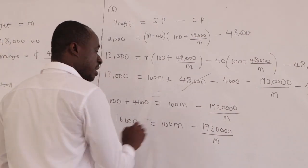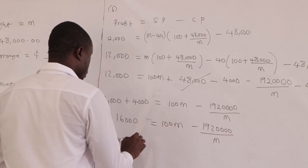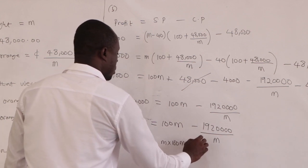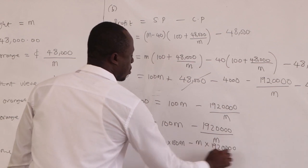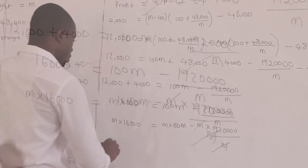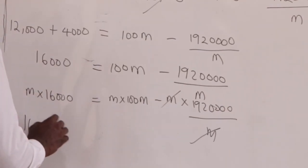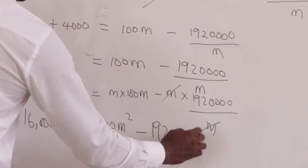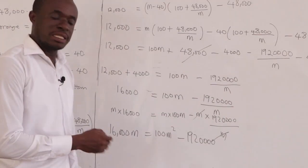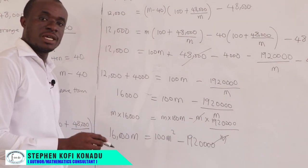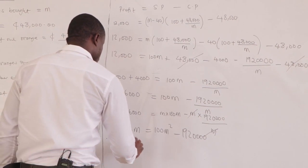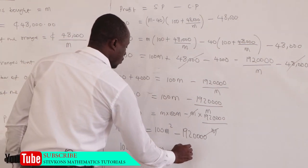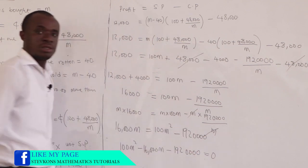Multiplying each term by M (the LCM): 16,000M equals 100M squared minus 1,920,000. Rearranging into standard quadratic form: 100M squared minus 16,000M minus 1,920,000 equals 0. Dividing through by 100: M squared minus 160M minus 19,200 equals 0.